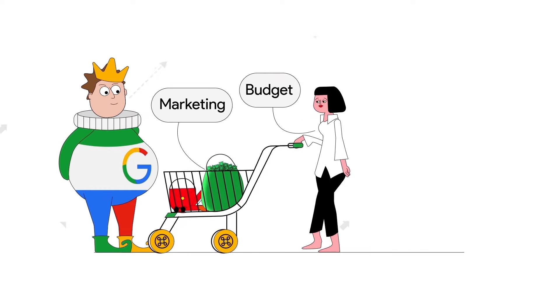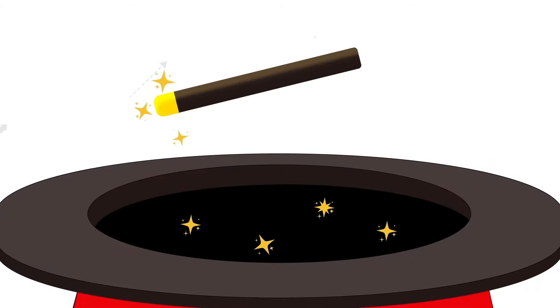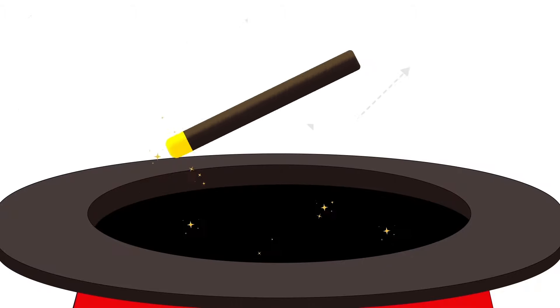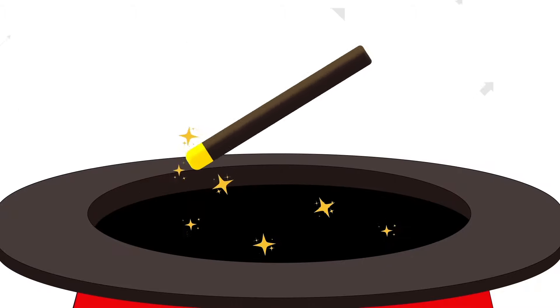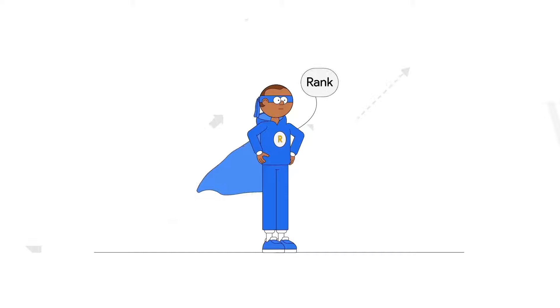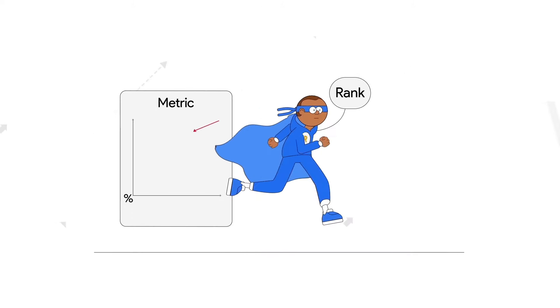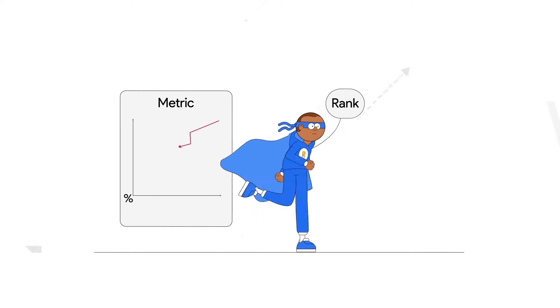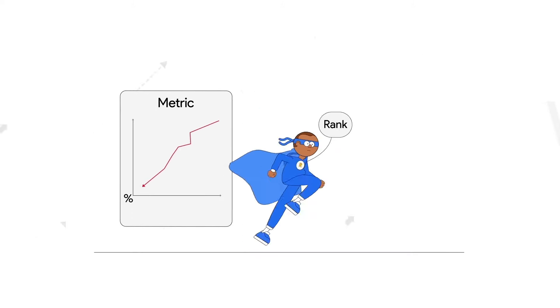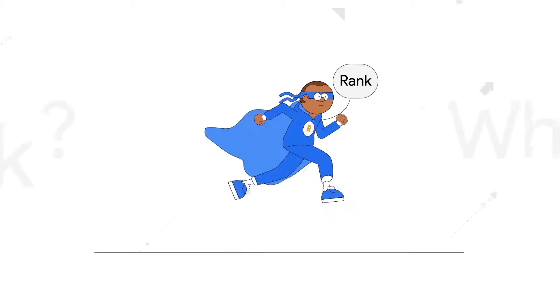Apple spent a whole lot on marketing, so you have to spend more too, to stop losing your impression share to budget. That's a simple fix. The next issue isn't really a simple fix — it's a little more complex. Search Lost IS Rank shows in percentage how many impressions you're losing because your ad rank is too low.